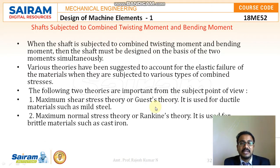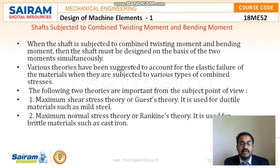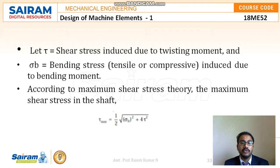Next, shafts subjected to combined twisting moment and bending moment. When the shaft is subjected to both, it must be designed on the basis of the two moments simultaneously. Two important theories are used: first, the maximum shear stress theory (Guest's theory), used for ductile materials such as mild steel; and second, the maximum normal stress theory (Rankine's theory), used for brittle materials such as cast iron.